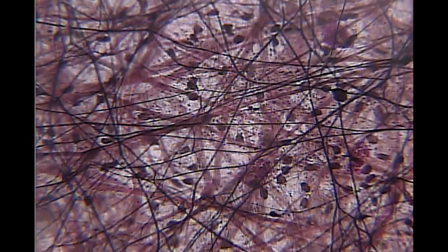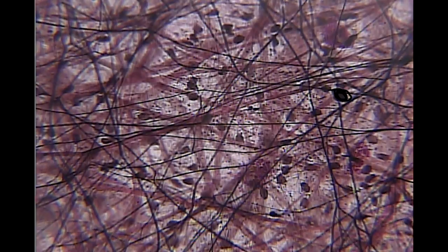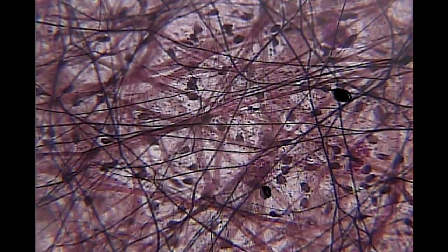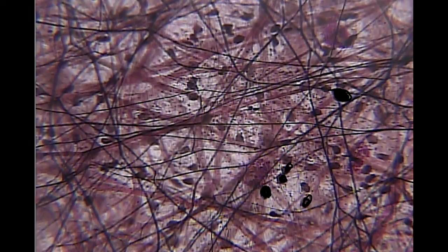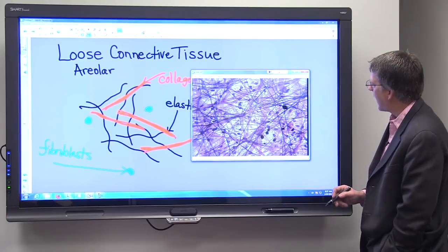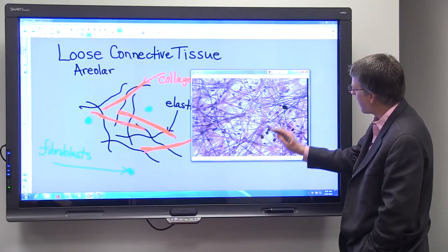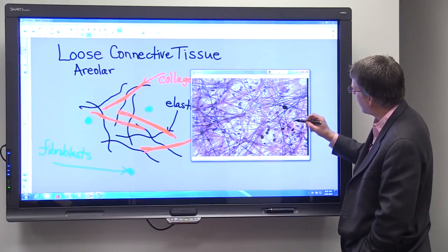Here is a fibrocyte. At this point, the fibers have already been secreted, so we'll call them fibrocytes. I'm just filling some of these in with the marker. We have fibrocytes scattered throughout and the fibrocytes are separated from one another.